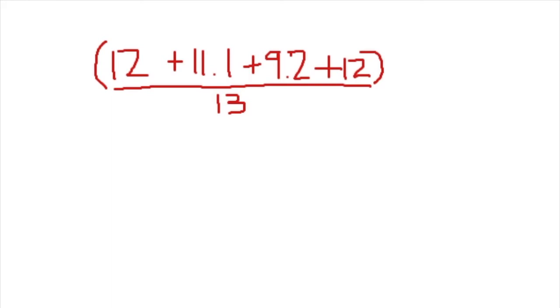So I just simplified this to make it easier to see here. And so what we have is 12, because four times three is 12, plus 11.1. The 11.1 is because we had 3.7 times three. And then we had 2.3 times four, that equals 9.2. So that's why we have 9.2 here. Then again, four times three is 12. So to simplify it, I rewrote the numerator, which again, is the top part of the fraction.